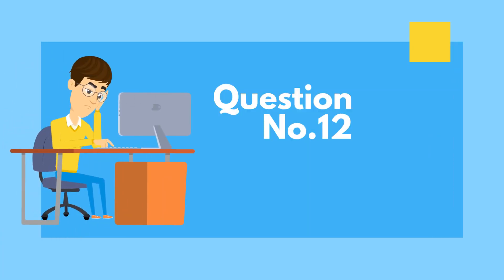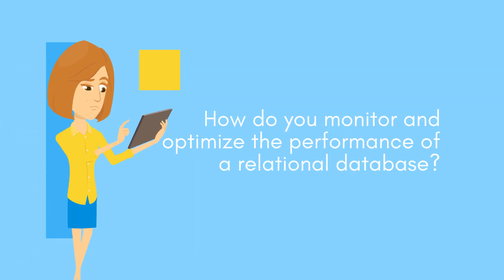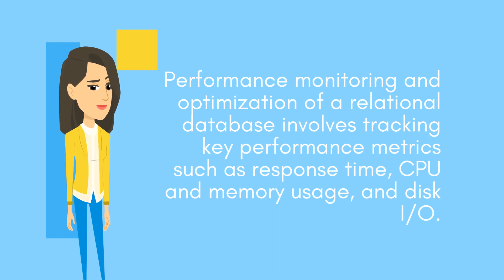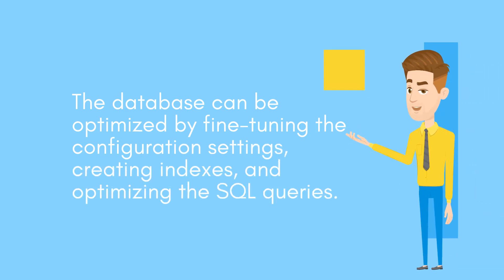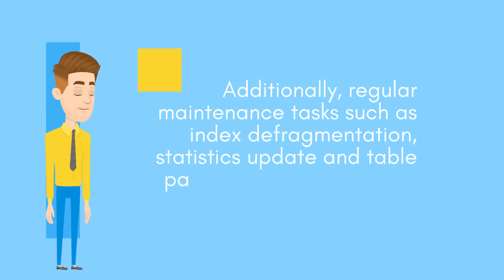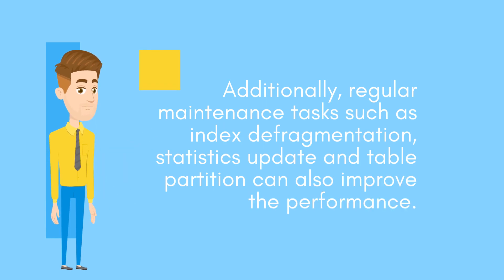Question number twelve: How do you monitor and optimize the performance of a relational database? Performance monitoring and optimization involves tracking key performance metrics such as response time, CPU and memory usage, and disk I/O. The database can be optimized by fine-tuning the configuration settings, creating indexes, and optimizing the SQL queries. Additionally, regular maintenance tasks such as index defragmentation, statistics update, and table partitioning can also improve the performance.